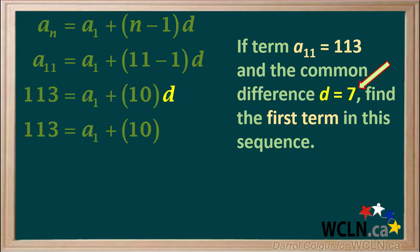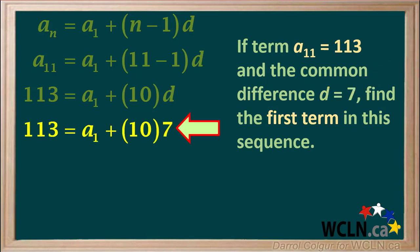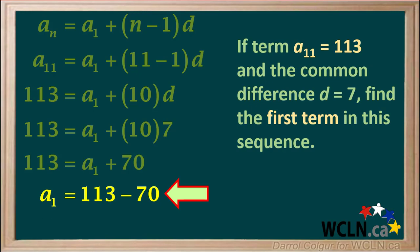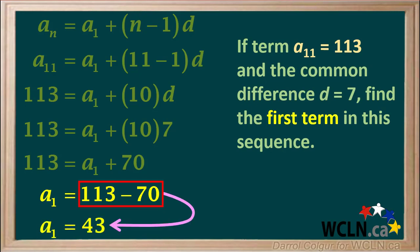The common difference d equals 7, so we substitute 7 for d. Now our equation is 113 equals a1 plus 10 times 7. 10 times 7 equals 70, giving us 113 equals a1 plus 70. We solve for a1 by subtracting 70 from both sides, so a1 equals 113 minus 70. 113 minus 70 equals 43, so the value for the first term a1 is equal to 43.